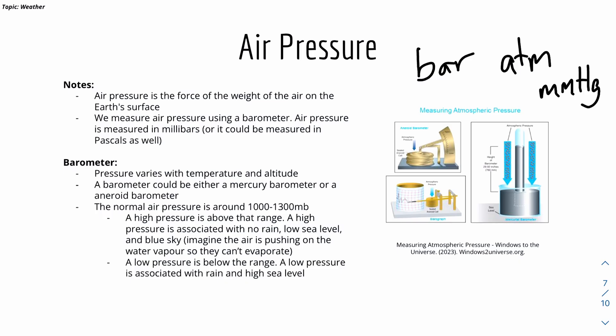We can think of it logically as if there's a high pressure, it means that the air is pushing a lot on the earth's surface so that the water vapor cannot evaporate. This forms no clouds and there will be no rain and the sea level will be low.